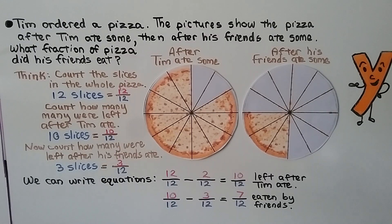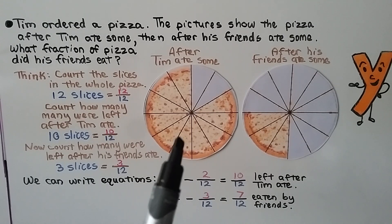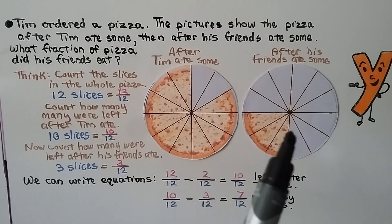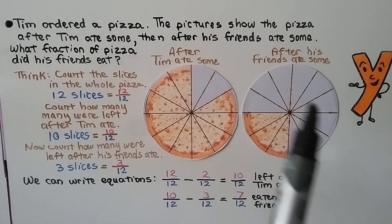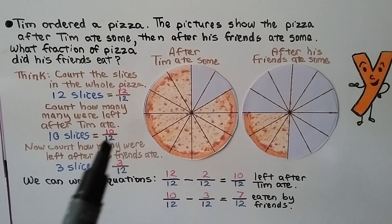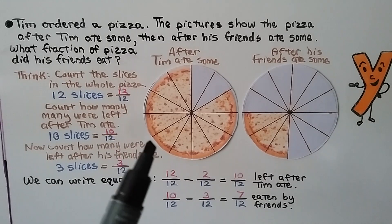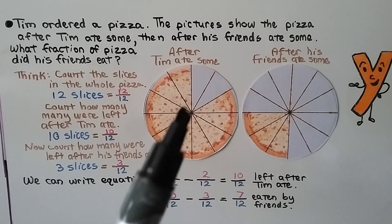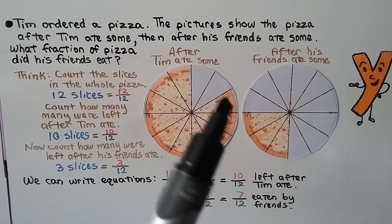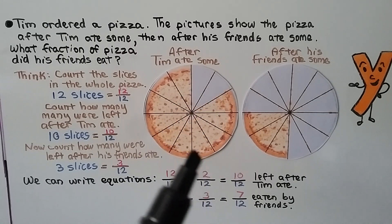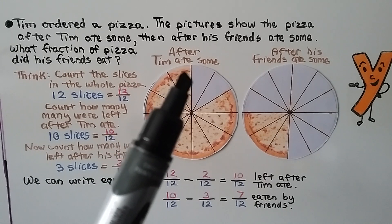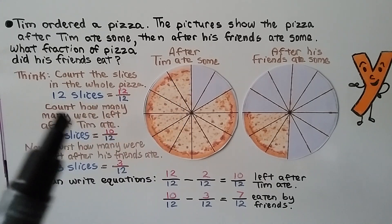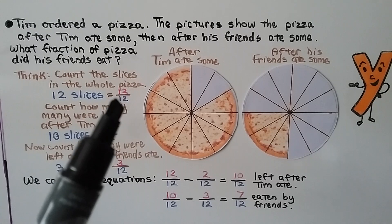Tim ordered a pizza. The pictures show the pizza after Tim ate some, then after his friends ate some. What fraction of the pizza did his friends eat? We count the slices in the whole pizza: 12 slices, that's 12 twelfths. We count how many were left after Tim ate some — 2 were eaten, so there are 10 left: 10 twelfths.